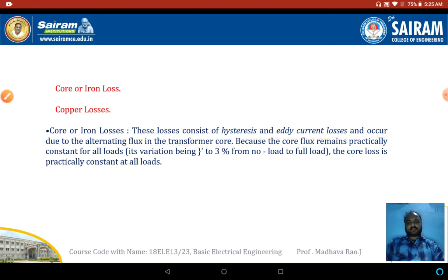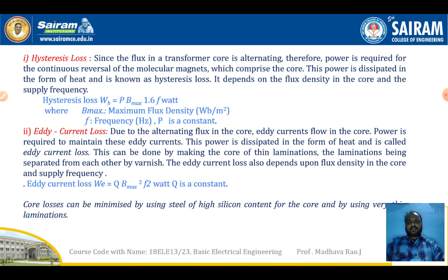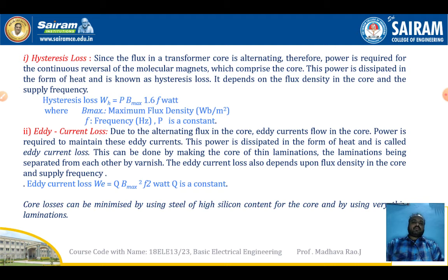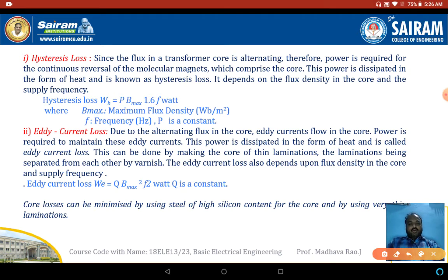Due to alternating flux in the transformer core, hysteresis losses occur. Some power is required for the continuous reversal of the molecular magnets. To maintain this reversal of molecules of magnets, some power is required, and the power dissipated in the form of heat is known as hysteresis loss.